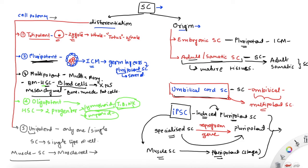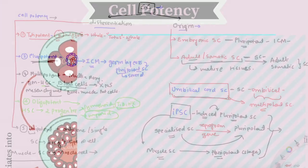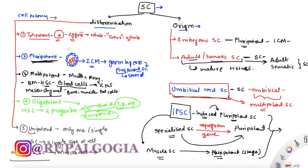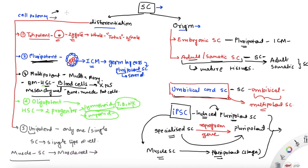There's an infographic explaining all the stem cell potency types with examples — I'll insert a snippet here. If you want more such infographics, you can visit my Instagram at rupalwogia. That's all for now — these terminologies are essentially what you need to know when it comes to stem cells. I hope this video was helpful and easy to understand. See you next time — until then, keep learning.